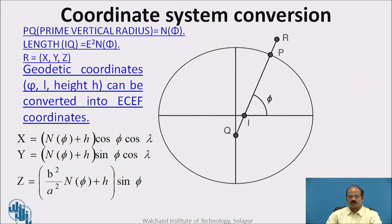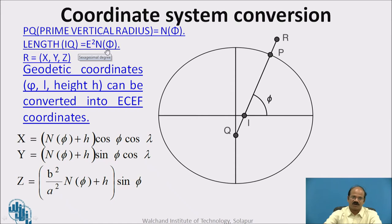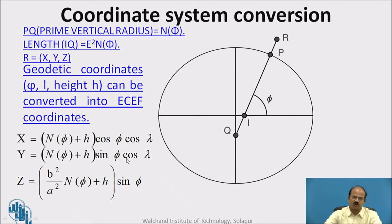Coordinate system conversion is of utmost importance. PQ, which is the prime vertical radius N(phi), is shown here where P and Q are identified. The length IQ is E² × N(phi), that is E² multiplied by the radius at prime vertical. Using the classical coordinate system of x, y, z, what we are aiming at is converting from geodetic coordinates phi (φ), lambda (λ), and height h to x, y, z. With knowledge of N(phi), h, phi, and lambda, you can convert to x, y, z coordinates using the corresponding equations.